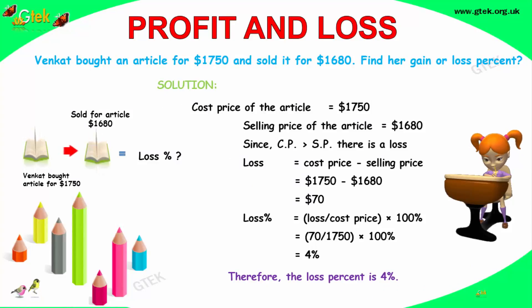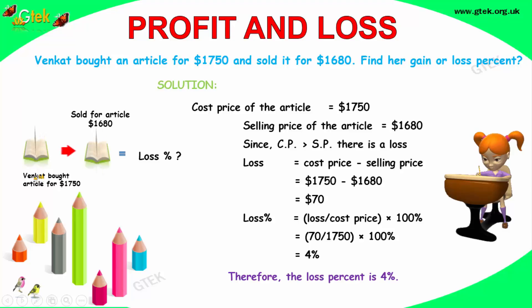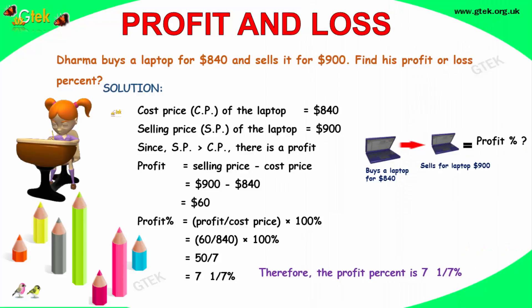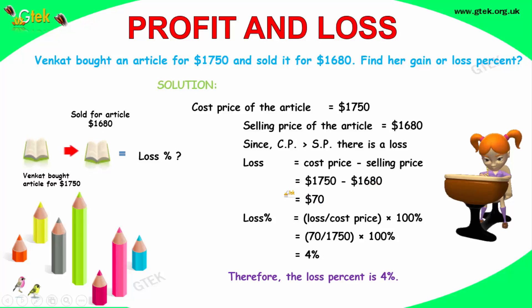Vinkertz bought an article for $1750 and sold the same for $1680. Find his loss and gain percentage. So bought article for $1750 and sold for $1680. Cost price is greater than selling price, so there is a loss. The loss is cost price minus selling price: 1750 minus 1680, so the loss is $70.